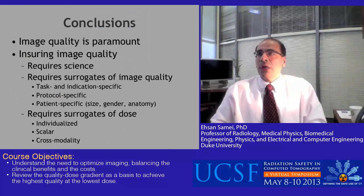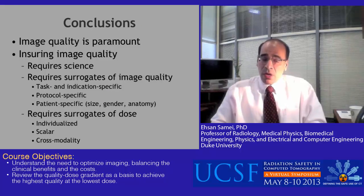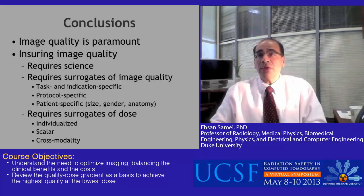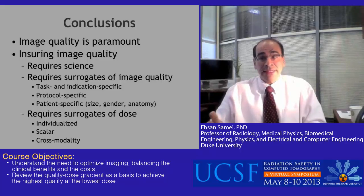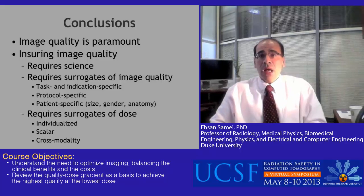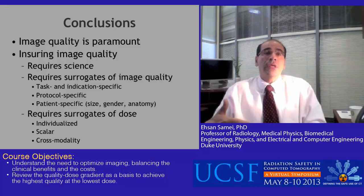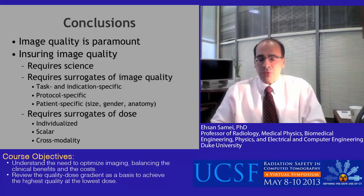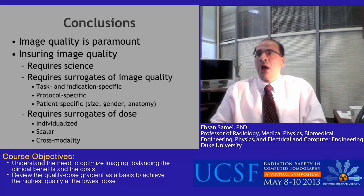Let me conclude. Image quality is paramount in any imaging operation. However, ensuring image quality requires science — it requires good surrogates of image quality that are task- and indication-specific, protocol-specific, and patient-specific in terms of size, gender, and anatomy.